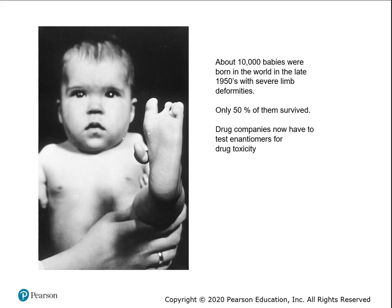Because of the thalidomide tragedy, there was a big wake-up call in understanding the structure of drugs and pharmaceuticals. Drug companies now have to have the complete chemical structure as part of their application to get a drug even into a clinical trial. If there are any chiral carbons, they have to synthesize all enantiomer forms and test all of them individually.